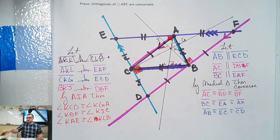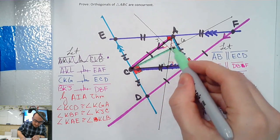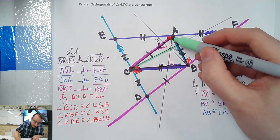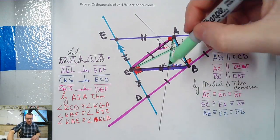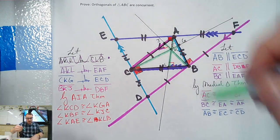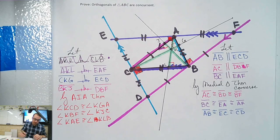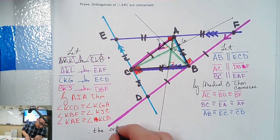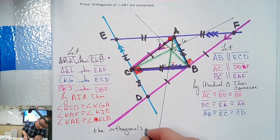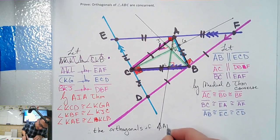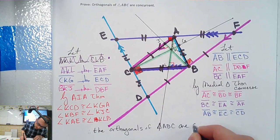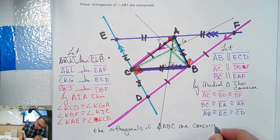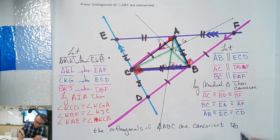And then the last thing: this is an orthogonal — vertex to 90. This is an orthogonal — vertex to 90. This is an orthogonal — vertex to 90. And they all intersect at K. So therefore, the orthogonals of triangle ABC are concurrent at K. All I need is concurrent. And we're done.